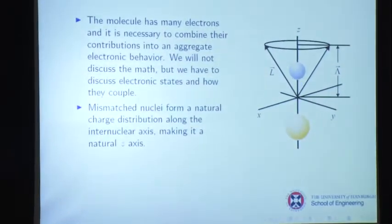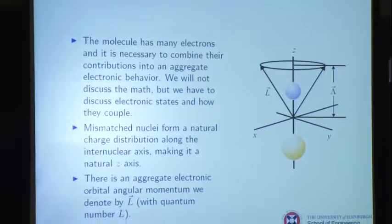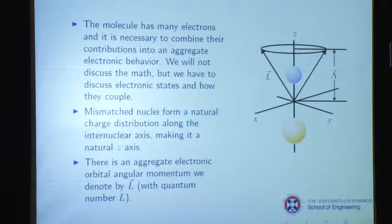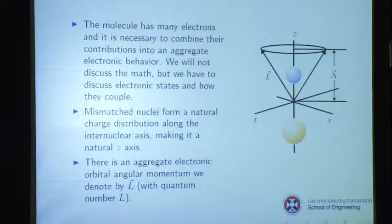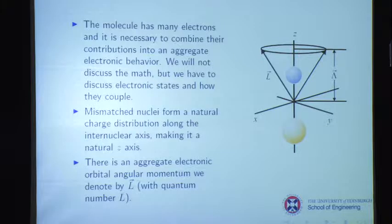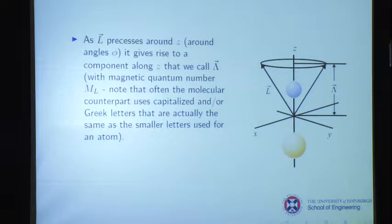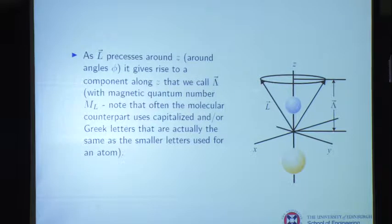Mismatched nuclei form a natural charge distribution, which makes a natural Z axis. We talk about this aggregate total orbital angular momentum, denoted by L — a vector with quantum number L. The component of L along the Z axis is lambda. L precesses around Z and gives rise to a component along Z called lambda, which has a magnetic quantum number M sub L.